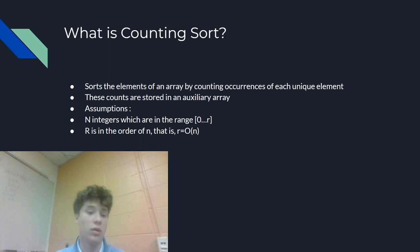But basically, when we say 0 through R, we're assuming that all the values are positive. It will only work if we have all positive values. And R is in the order of n, R equals O(n).